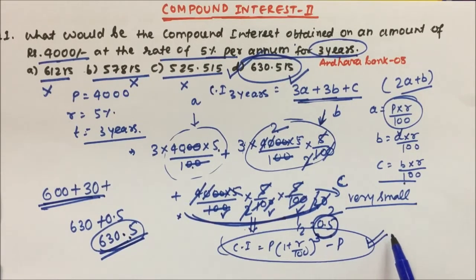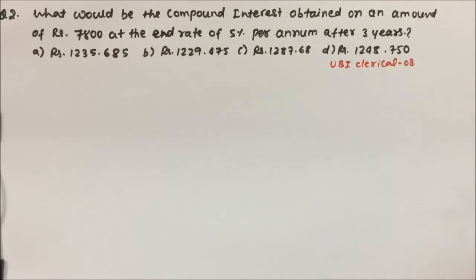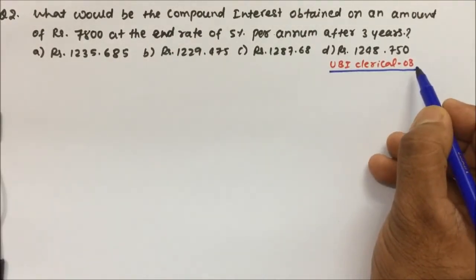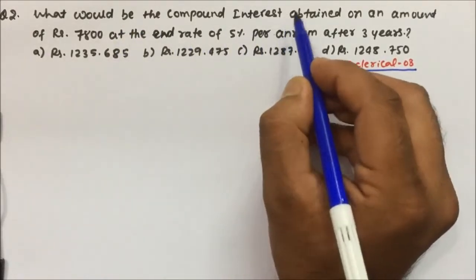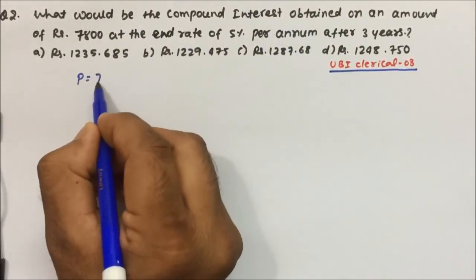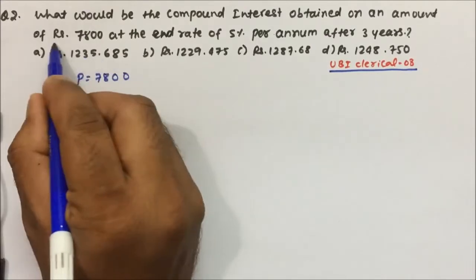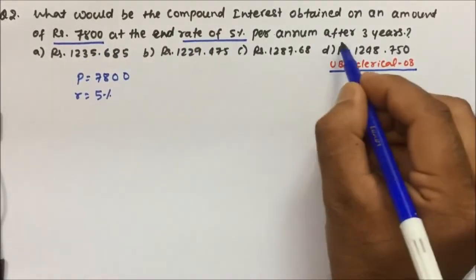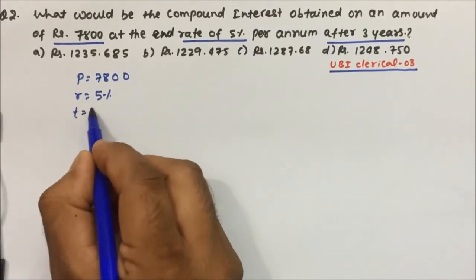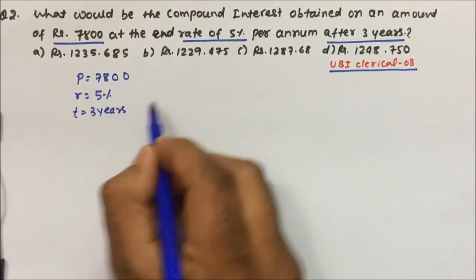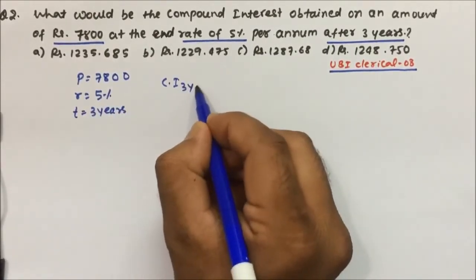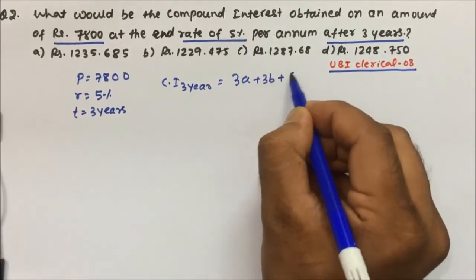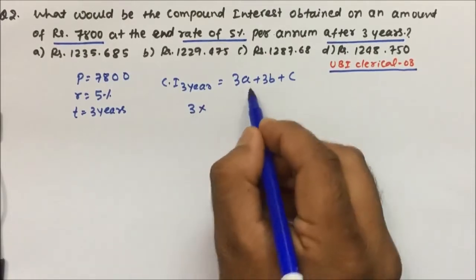Question number two was also asked in United Bank of India clerical 2008. What will be the compound interest obtained on an amount of 7800? The principal is given, rate is also given as 5%, and time is also given as 3 years. We will use the formula for compound interest for 3 years: 3a plus 3b plus c.